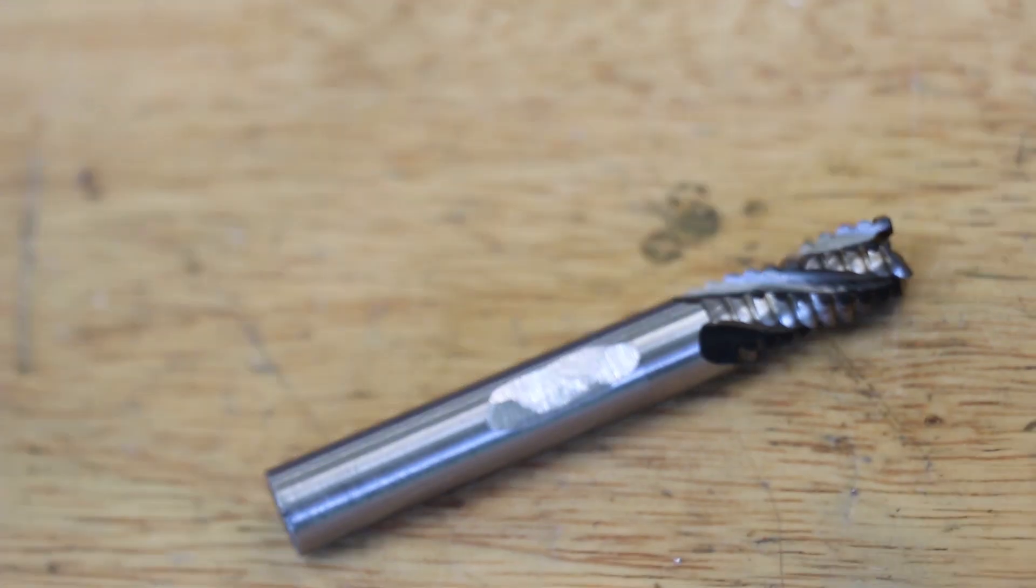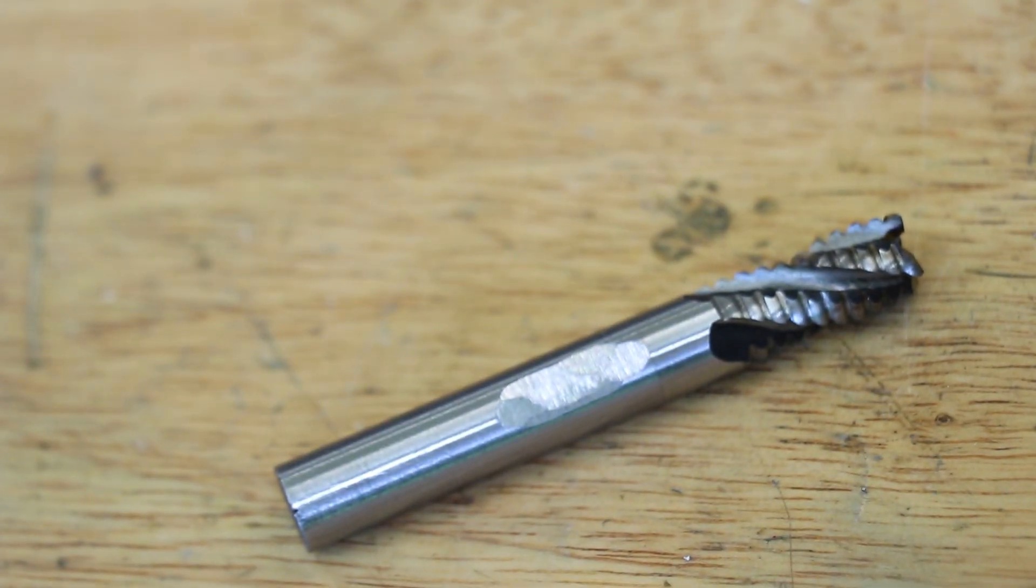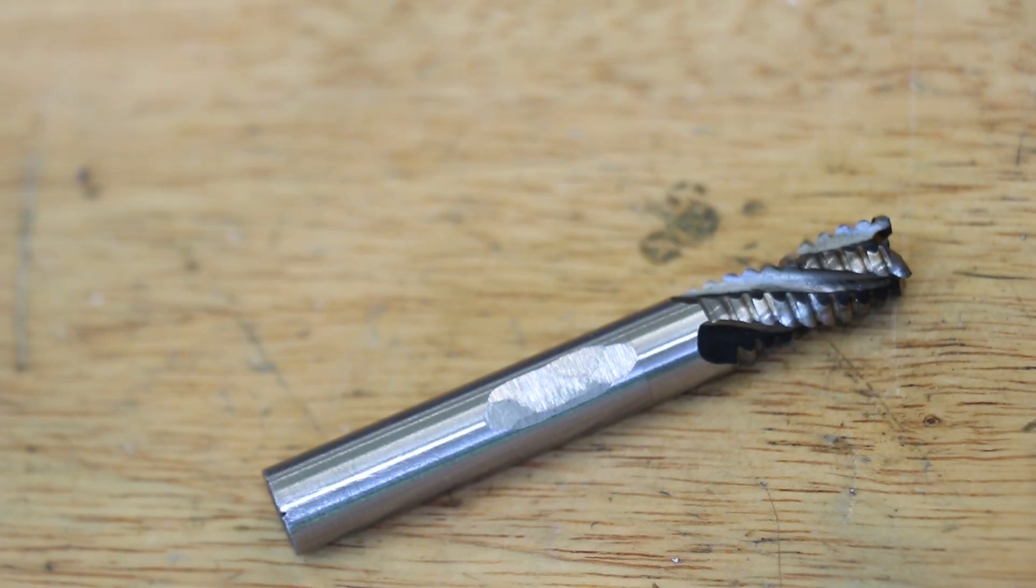And to help lock the tool in place it's a good idea to grind in a flat spot on the side like you would with a side locking end mill.